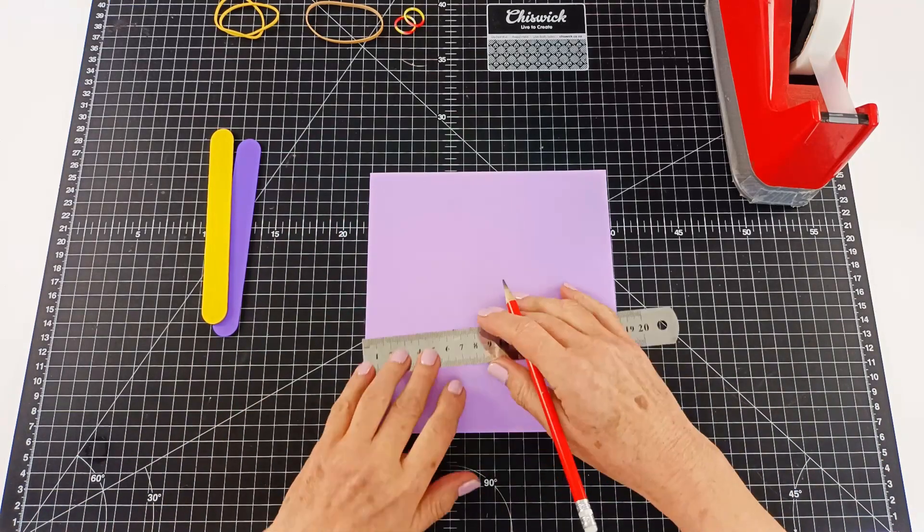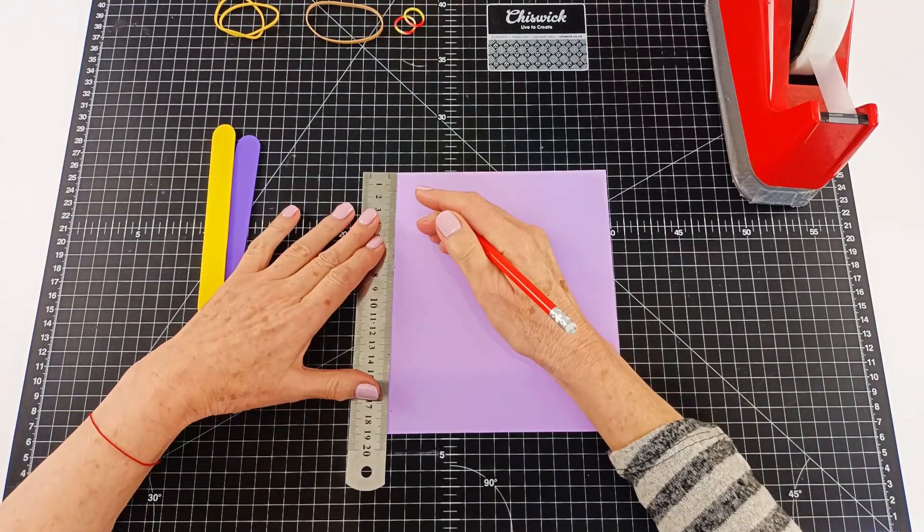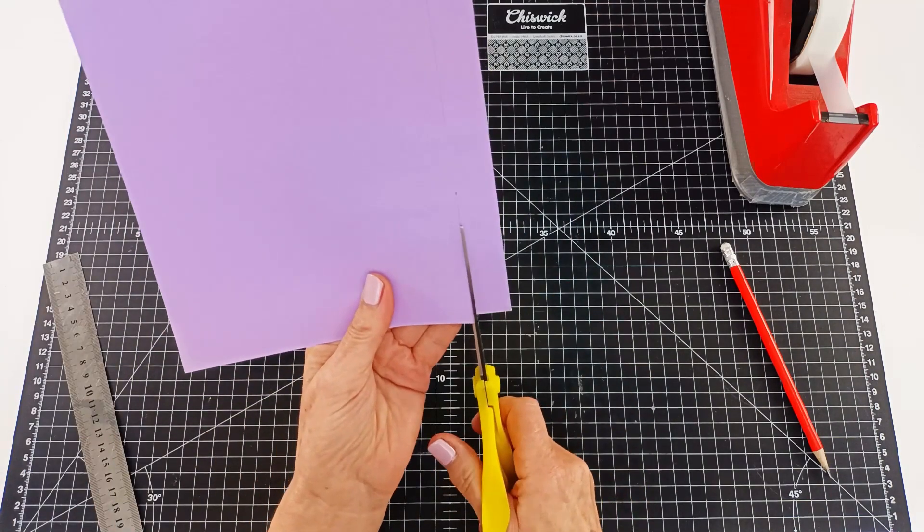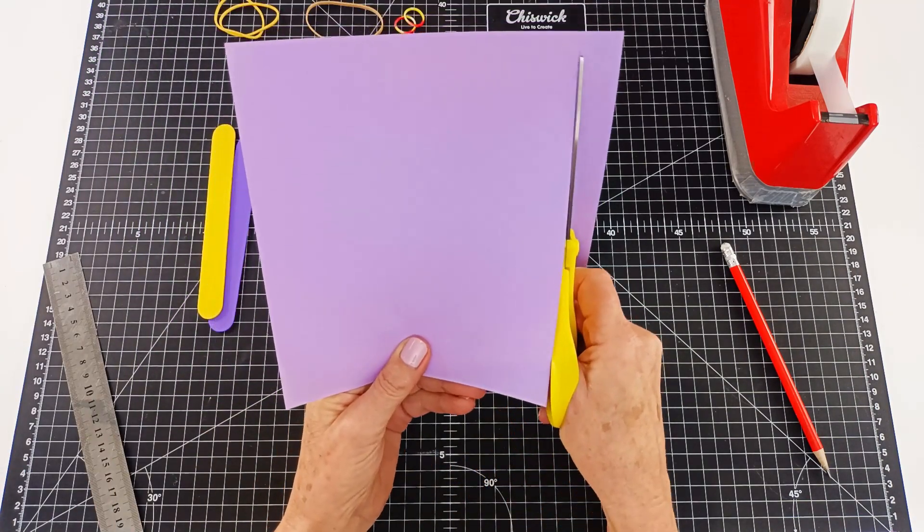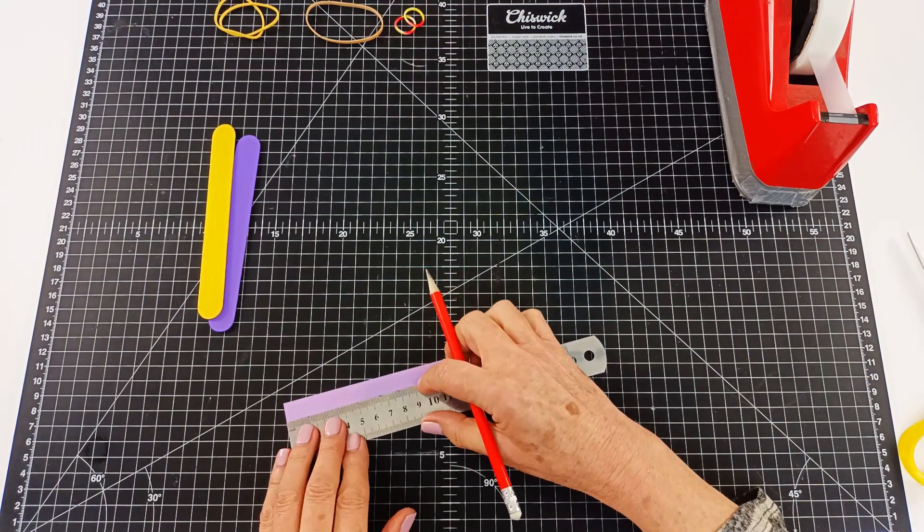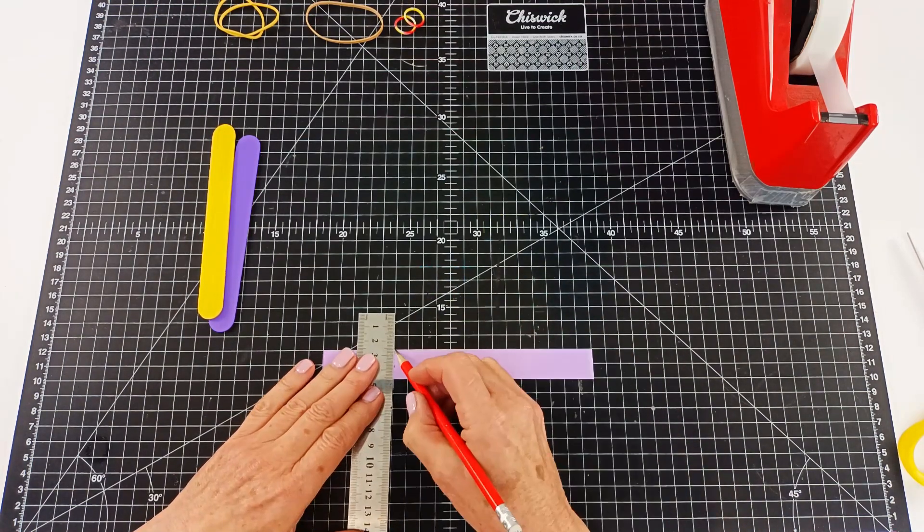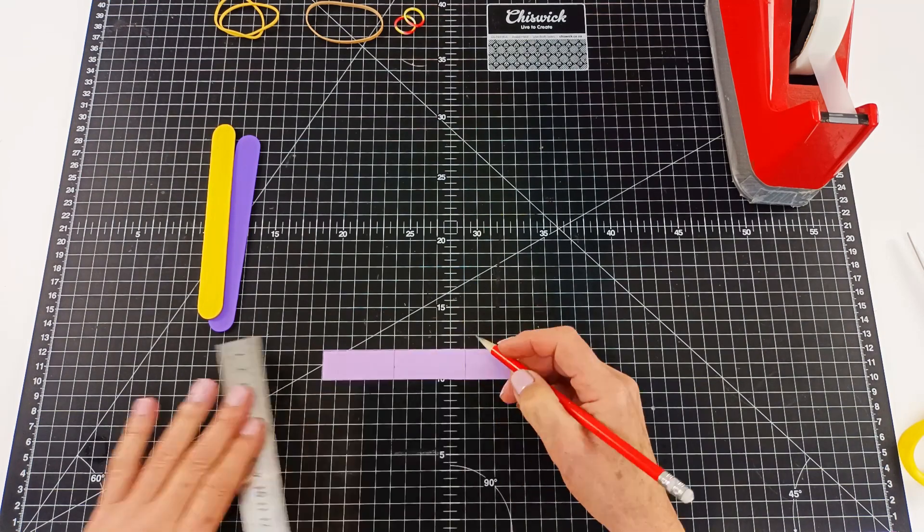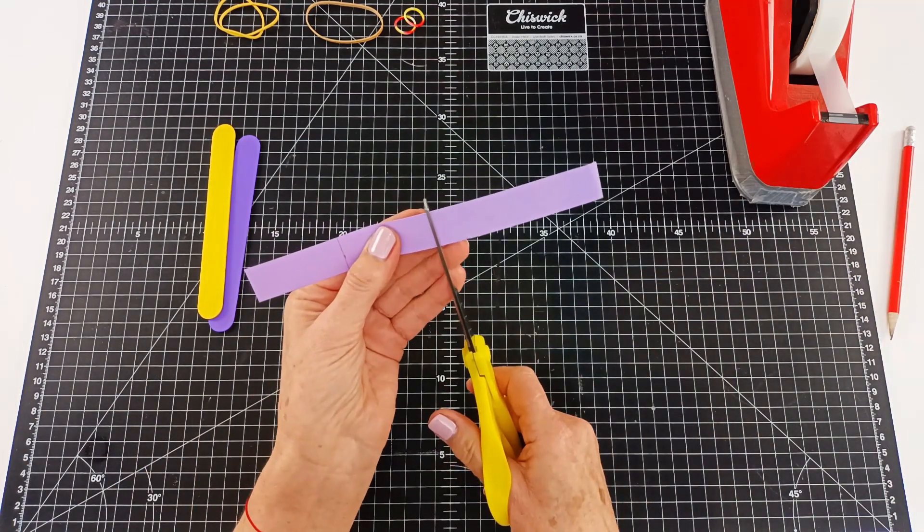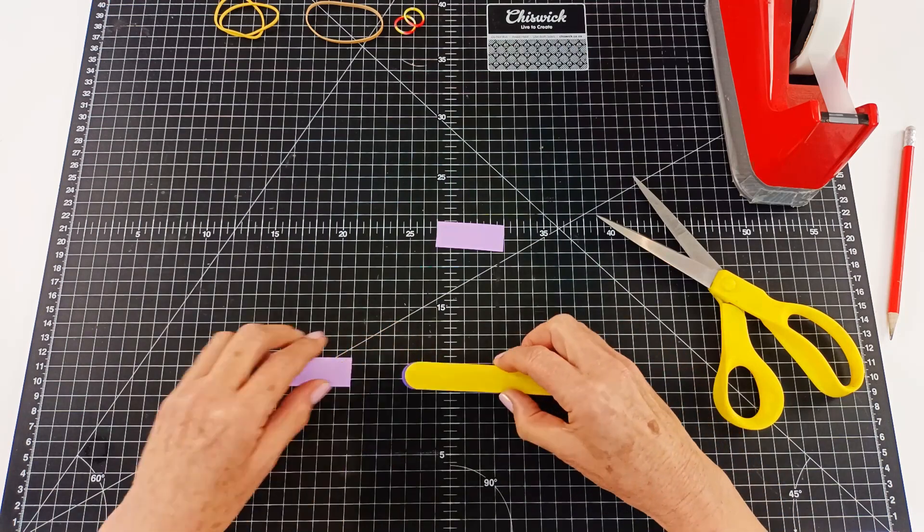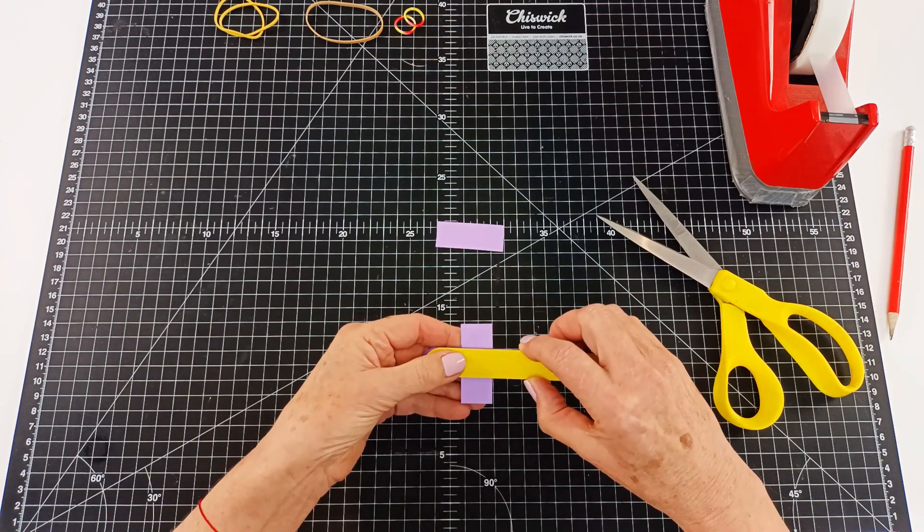So the first thing we're going to do is grab our sheet of paper and we're going to measure out a two centimeter wide strip and we're going to cut that out and then we're going to measure at five centimeters and ten centimeters. We're going to make a line across and then we're going to cut. So now we have two five centimeter long strips that are two centimeters wide.